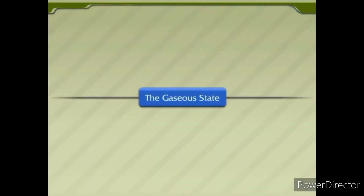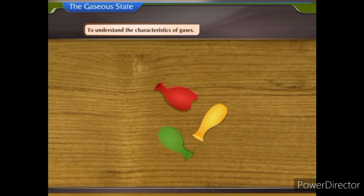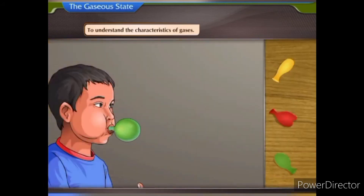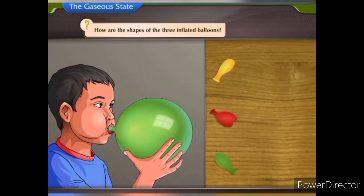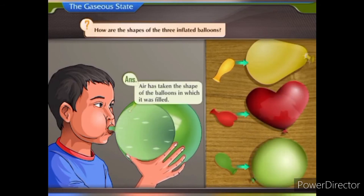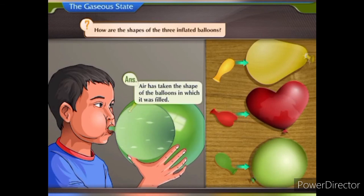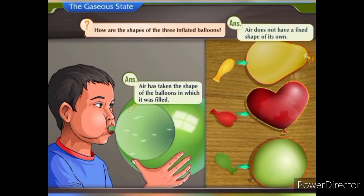The gaseous state. Let us perform an experiment to understand some characteristics of gases. Take three balloons of different shapes. Blow up all three balloons. What do you observe? Air has taken the shape of the balloons in which it was filled. This shows that air does not have a fixed shape of its own.